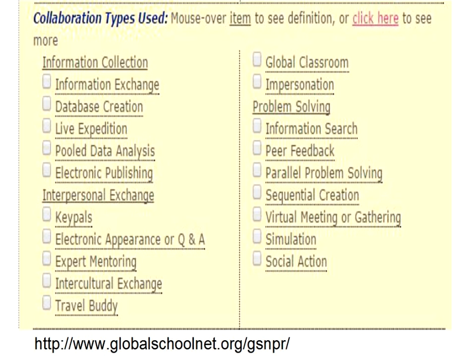We can begin to do some interpersonal exchanges: ePals, Question and Answering, Expert Monitoring, Intercultural Exchanges, Travel Buddies, Global Classroom. Then we can move up to another level of actually problem solving, information searching, peer problem solving. We've actually done numerous things with classes in other countries about how we can reduce school pollution. The point is how do we begin to contact people and work with them?